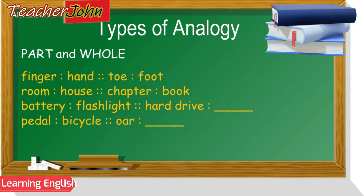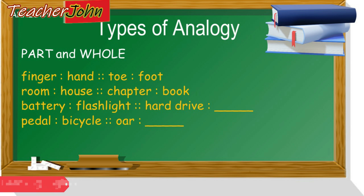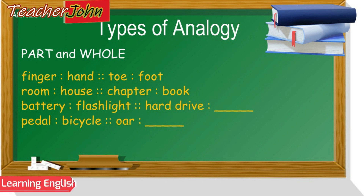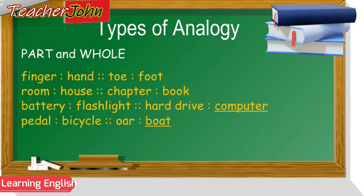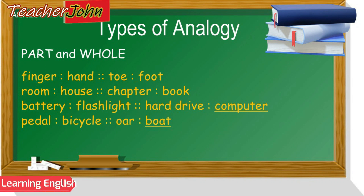This type of analogy shows the relationship between things and their parts. Read these examples with me: Finger is to hand as toe is to foot. Room is to house as chapter is to book. Battery is to flashlight as hard drive is to computer. And pedal is to bicycle as oar is to boat.